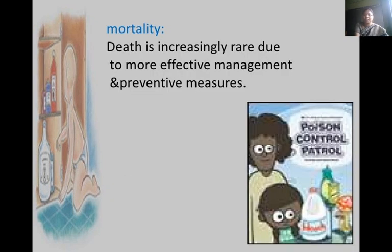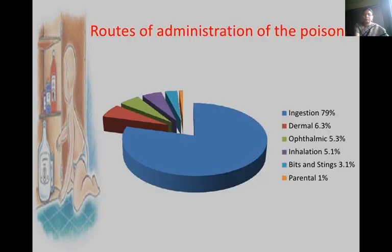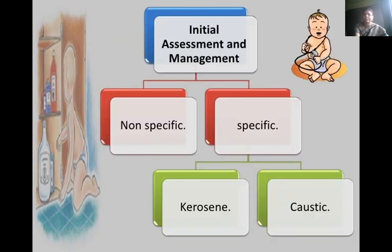Regarding mortality, death is increasingly rare due to more effective management and preventive measures. The routes of poison administration are: ingestion 71%, dermal 6.3%, ophthalmic 5.3%, inhalation 5.1%, bites and stings 3.1%, and parenteral 1%. Initial assessment and management can be non-specific or specific — either kerosene or caustic.